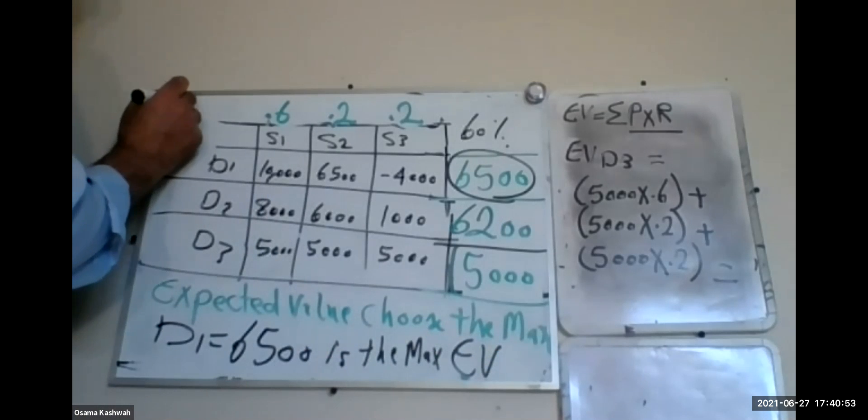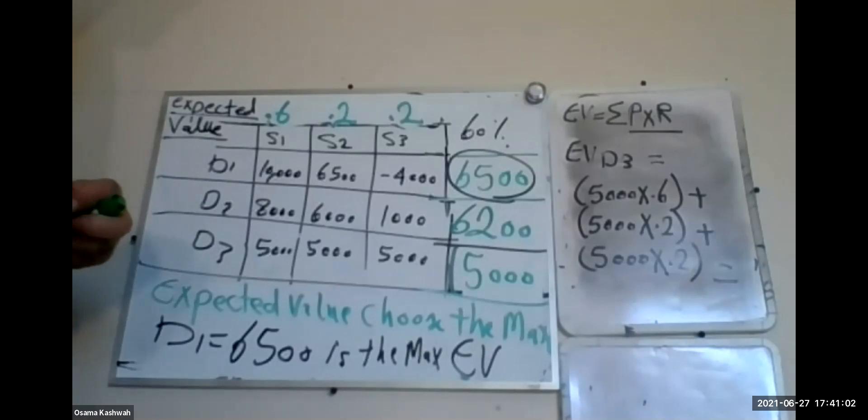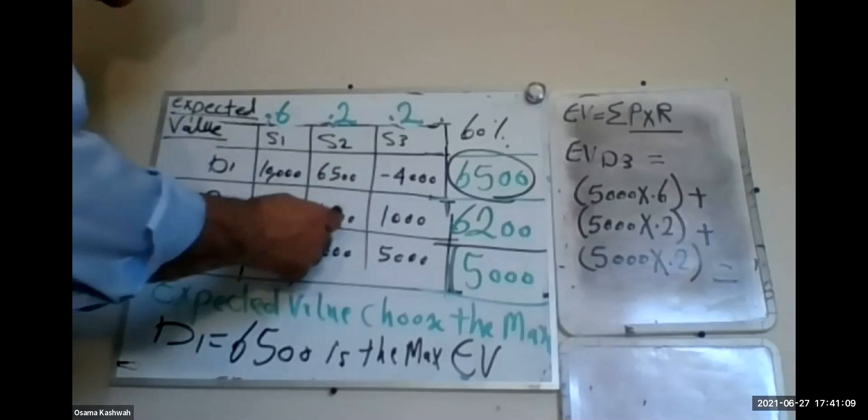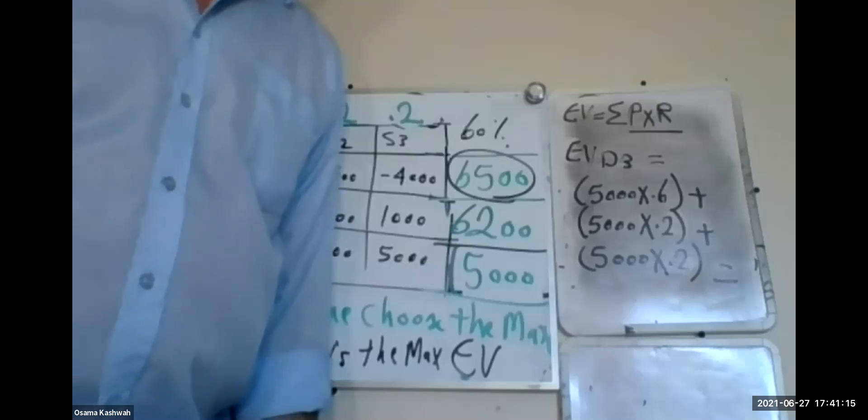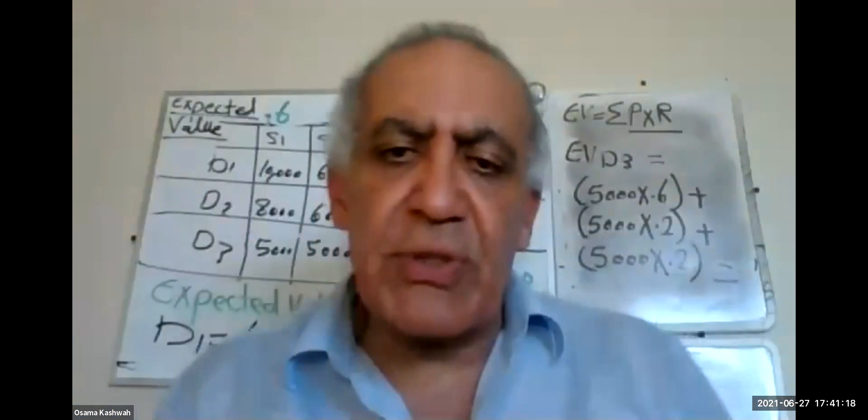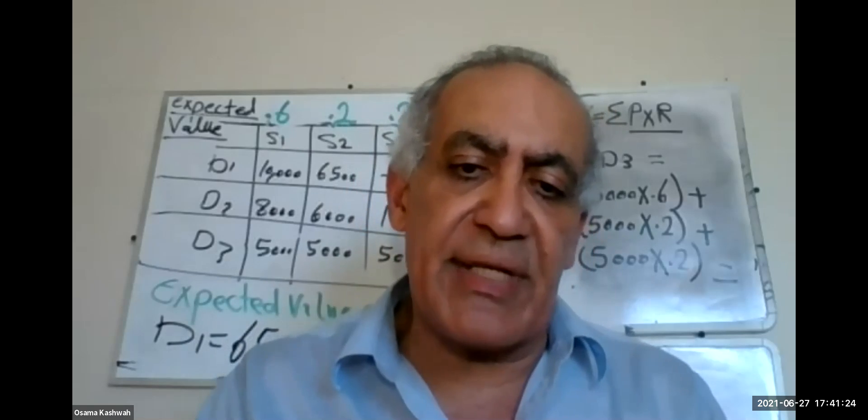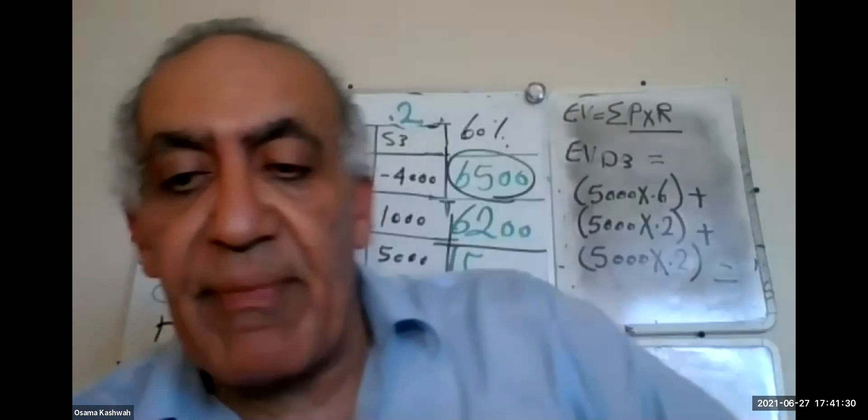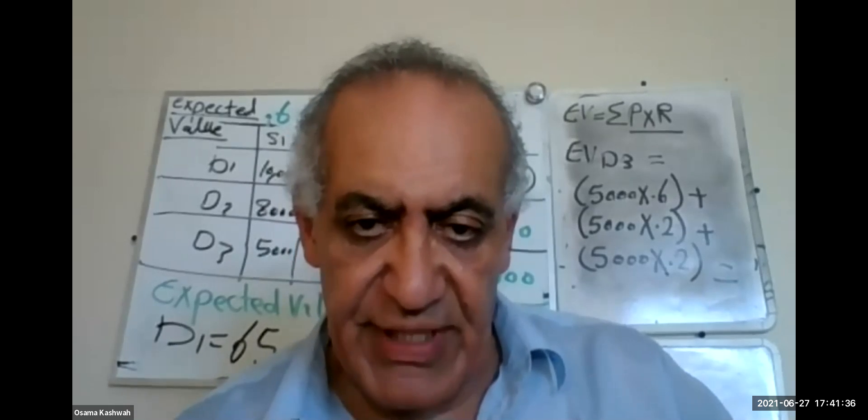And this method, like we said, is called expected value. Don't forget, we multiply the probabilities which is in green here, times the revenues of each decision or alternate D1, D2, D3, like the way I showed you. Then you will choose the highest number. So you will multiply by the probabilities. Then the second step is that you will choose the maximum of the column which you made. You will choose the maximum of it. Thank you so much and have a good night. See you. Take care of yourself. Bye bye everyone.